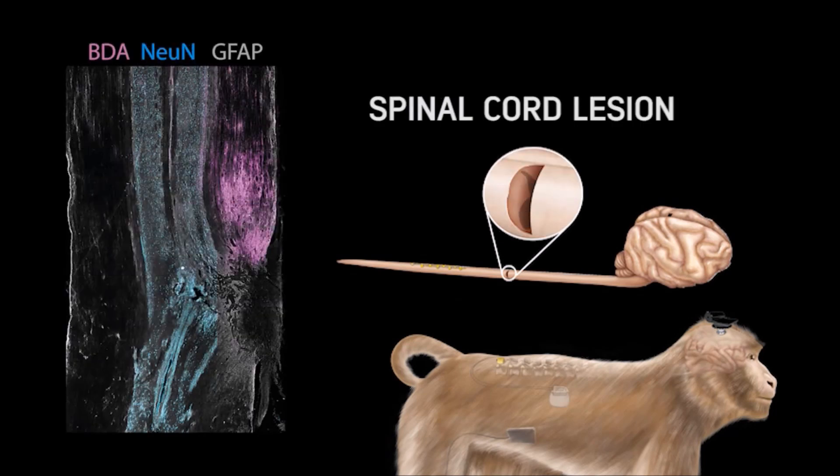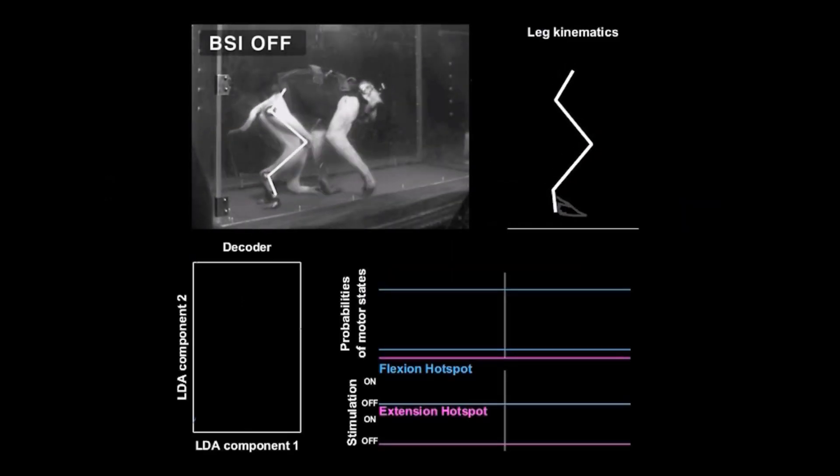Monkeys received a spinal cord injury interrupting the corticospinal tract at the thoracic level. This lesion led to a paralysis of the leg ipsilateral to the injury.